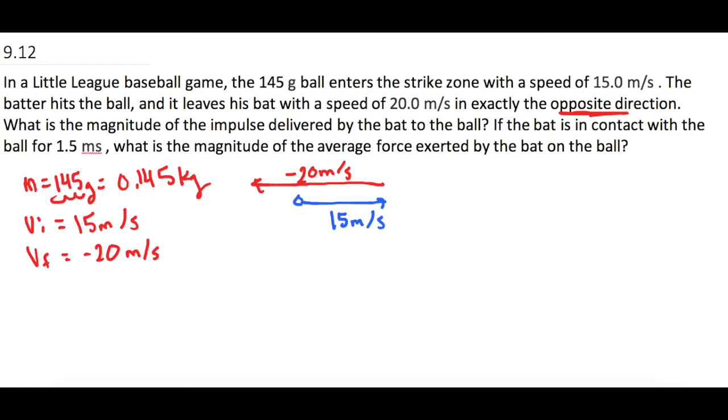And then for part B, they tell us the time that it's in contact with the bat is 1.5 milliseconds, and in standard units, if we move it one, two, three, we'll have 0.0015 seconds.